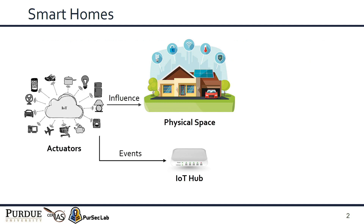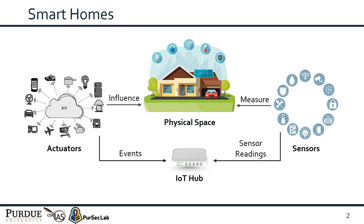In a smart home, actuators influence physical channels by executing actuation commands. When an actuator state changes, it sends an event notification to the IoT hub to report this change. Sensors measure the physical channels and report the sensor readings to the IoT hub. The IoT hub stores the cyber states of the devices to monitor them and to activate actuators based on the IoT apps installed in the smart home.